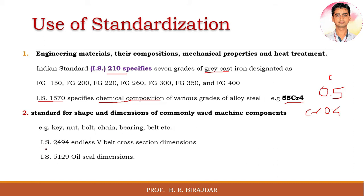Indian Standard IS 2494 covers the endless V-belt — its V cross-section, dimensions, and other specifications. Indian Standard IS 5129 is for the oil seal dimensions — inner diameter, outer diameter, and thickness. All these dimensional details are indicated in these Indian Standards.